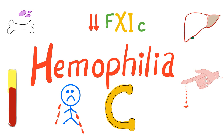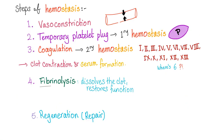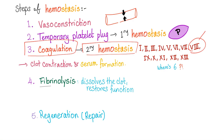Please do not forget that hemophilia C is the only hemophilia that's not X-linked recessive. Indeed, it is autosomal recessive. The problem in hemophilia is with step number three, the coagulation, specifically the secondary hemostasis. Hemophilia A has a problem with factor 8, hemophilia B with factor 9, and hemophilia C with factor 11. A and B are X-linked recessive, but C is autosomal recessive.